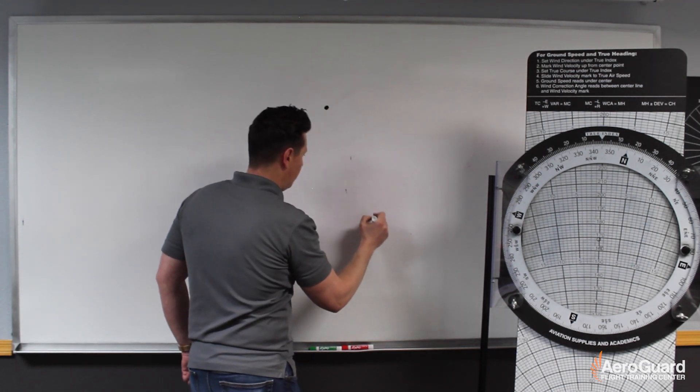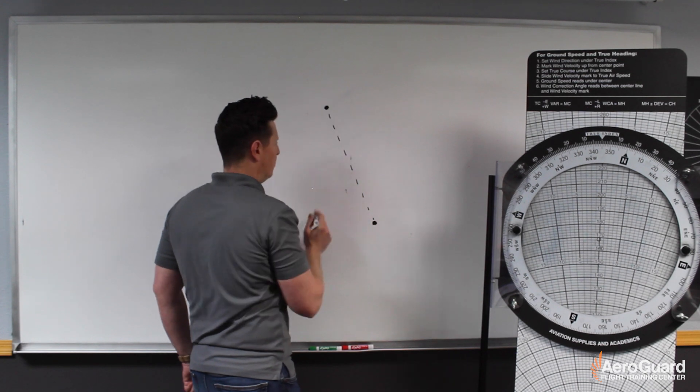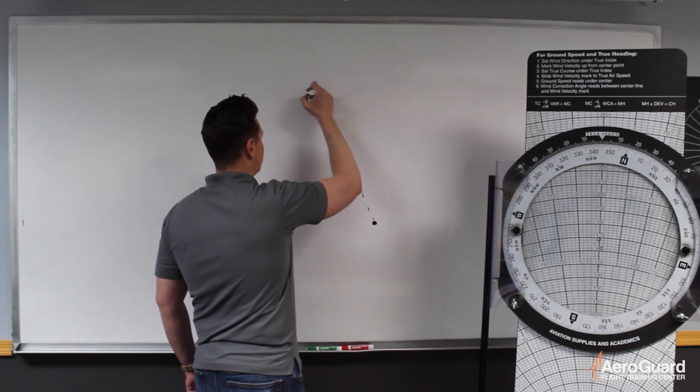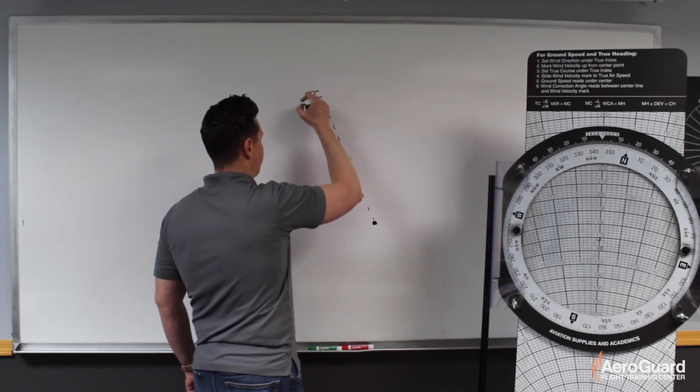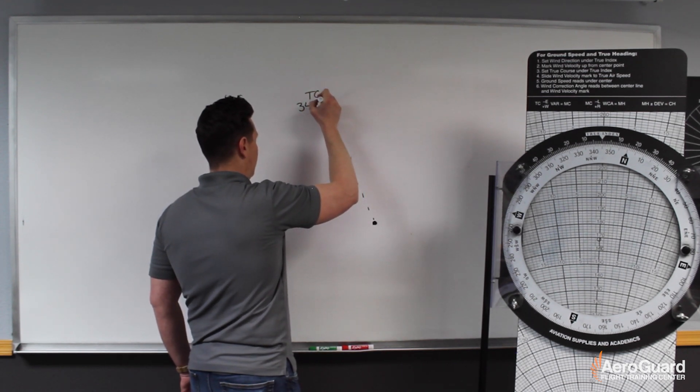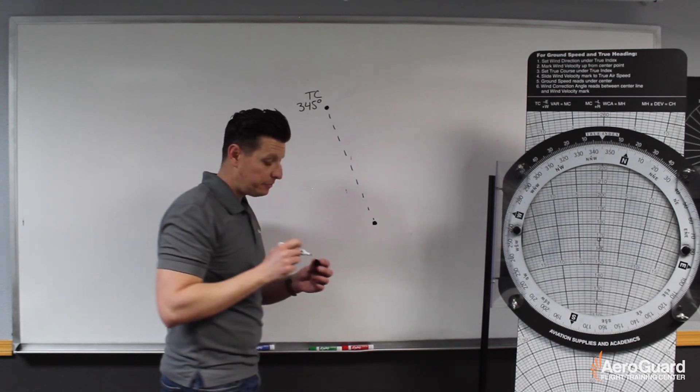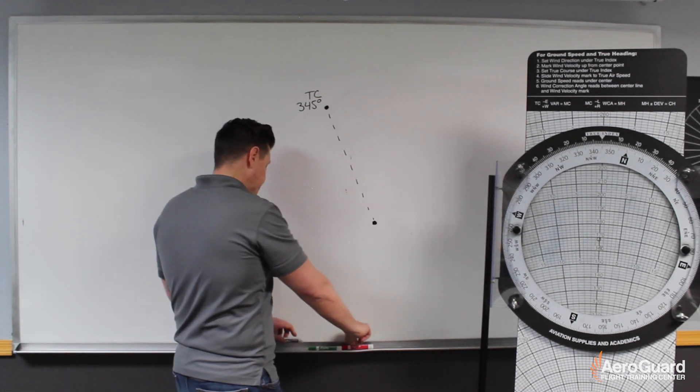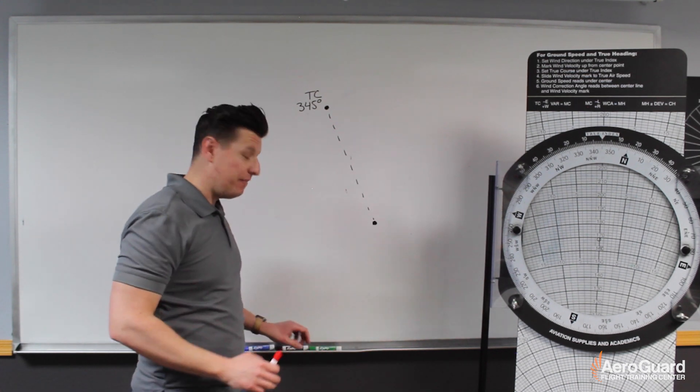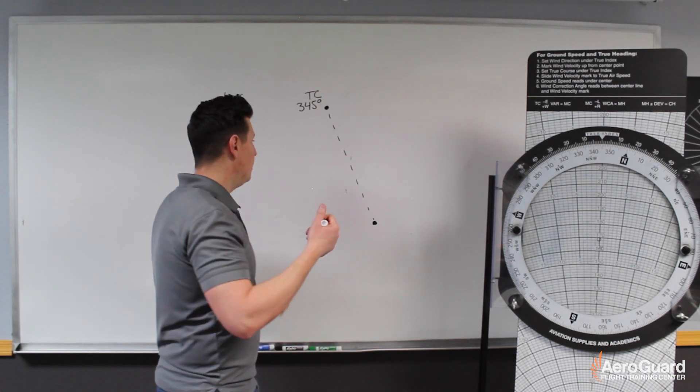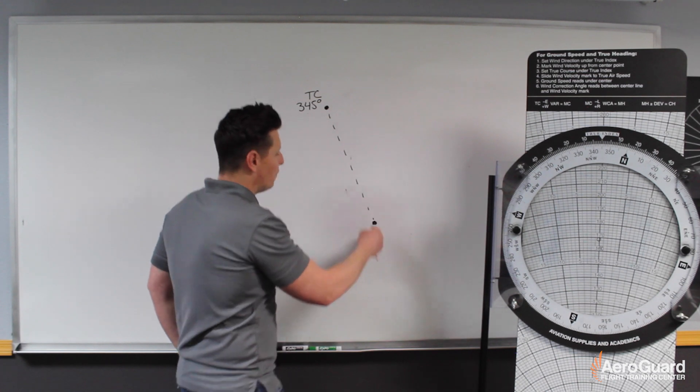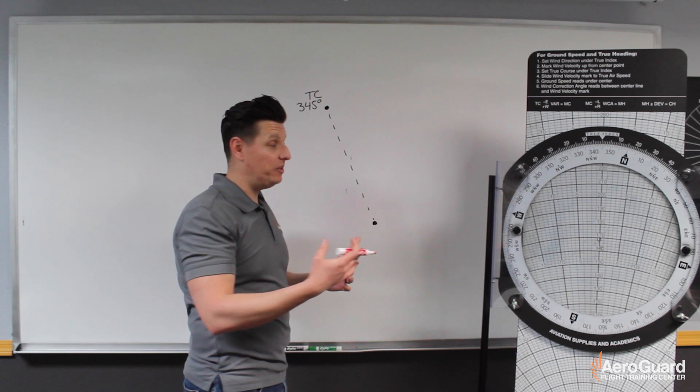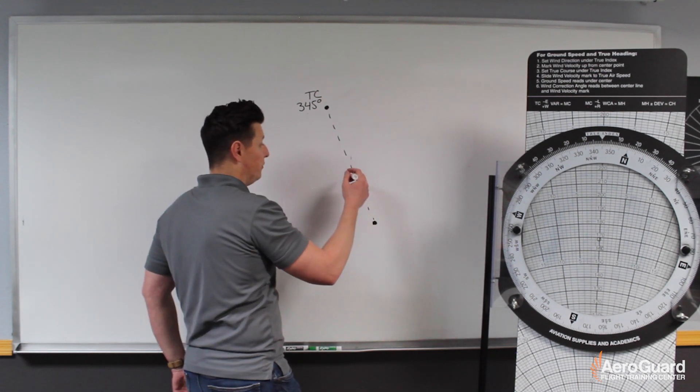Let's say we have a starting point and we have an ending point. And if I draw the course that connects those, let's just say that that course is the true course of approximately 345 degrees. Then it tells us we have a true heading of 355 degrees. What that means is in order for our airplane to fly along this track, our nose is going to have to be pointed in the direction of 355 degrees.